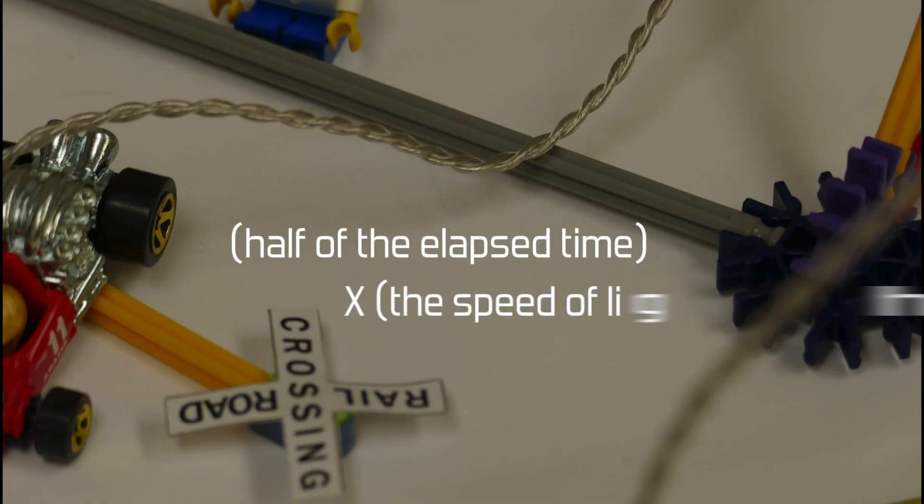Half of the elapsed time, multiplied by the speed of light, gives us the distance of the object.